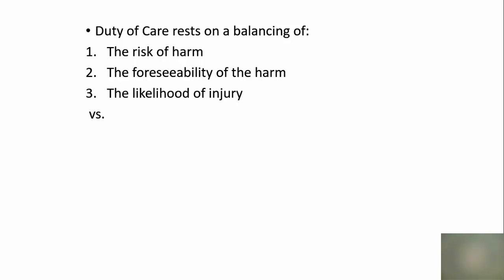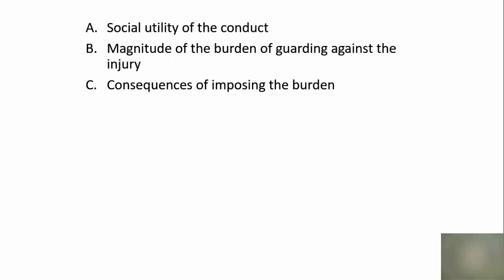So, if you establish that there was an obligation — a duty — in the first part, then you balance that against whether or not meeting that obligation is justified. The first part of the second three-part test is: what is the social utility of the conduct? Then, what would be the magnitude of the burden to prevent the injury? And what would be the consequences of imposing that burden?